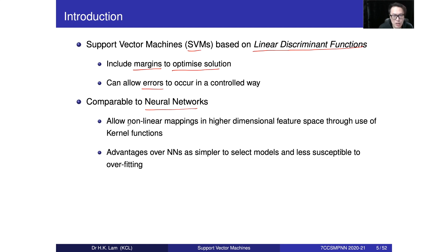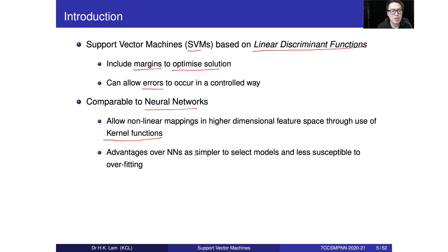Just as neural networks use an activation function to map lower-dimensional feature space into a higher-dimensional space to deal with non-linearity, the SVM uses a kernel function — a concept very similar to the activation function. An advantage over neural networks is that the SVM has a simpler single-output, multiple-input three-layer structure, and because of the margin maximization through optimization, it is less susceptible to overfitting.